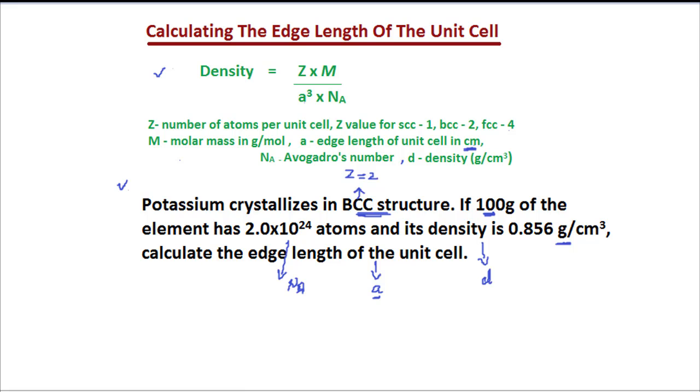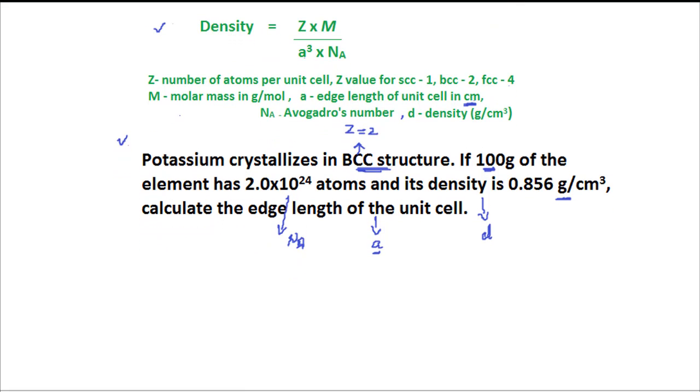Let's apply this density formula. We can plug in the known values and find out A value. Density value is given 0.856. Here we have 0.856 gram per centimeter cube is equal to Z, and Z is number of atoms are 2 because BCC structure is there.